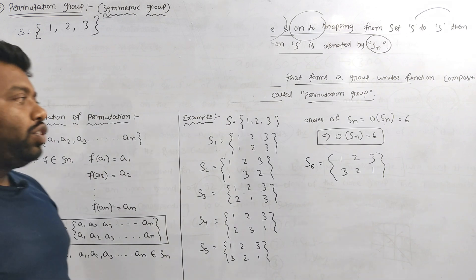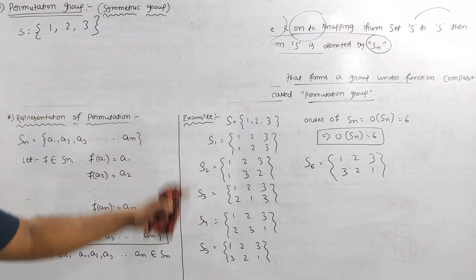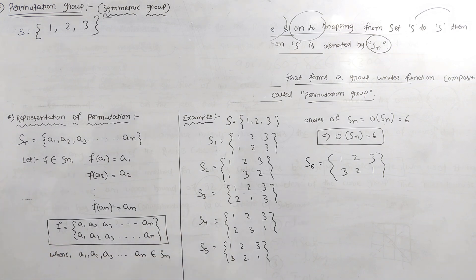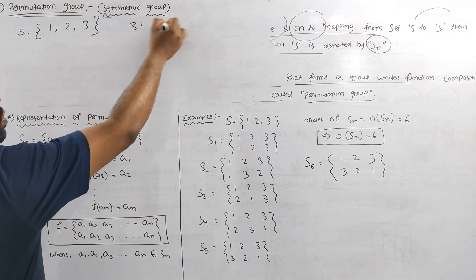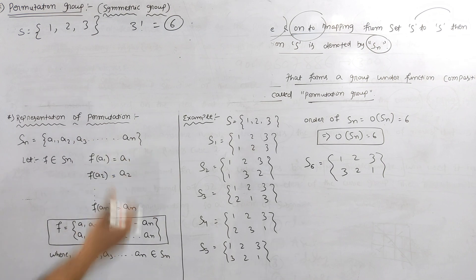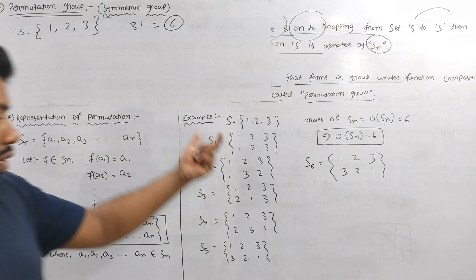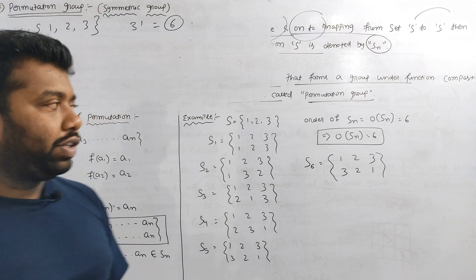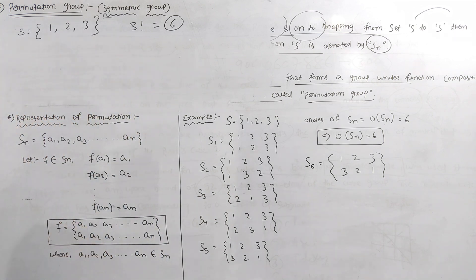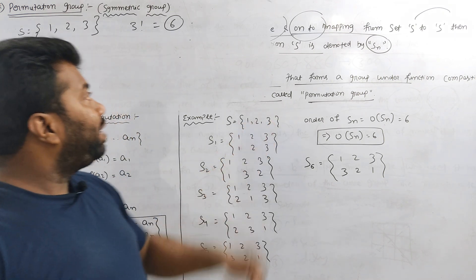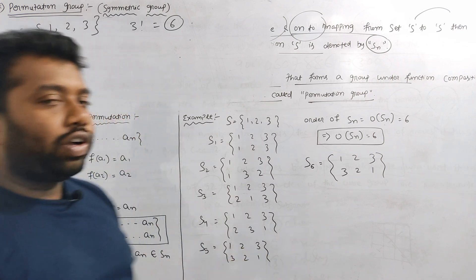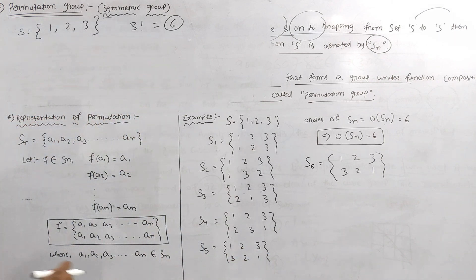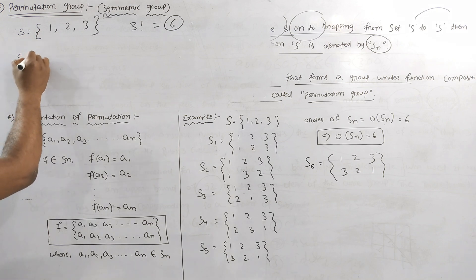How many permutations do you have to arrange? How many elements do you have to arrange? How many permutations are there? How many elements do you have? You have three elements. How many elements do you have to form or write?